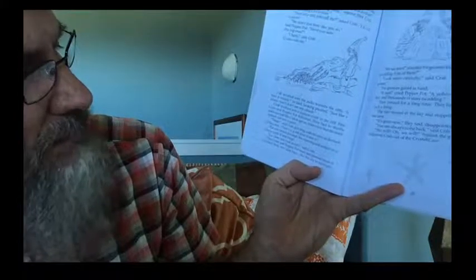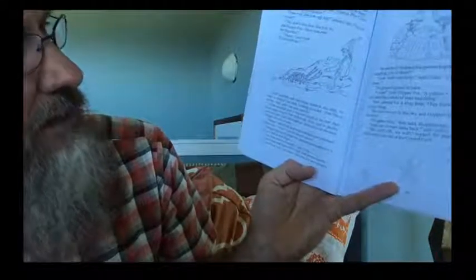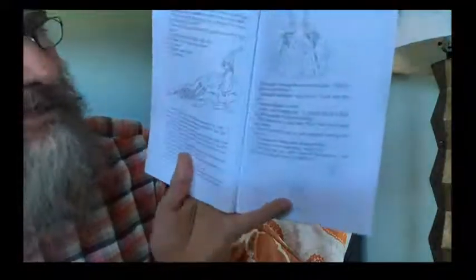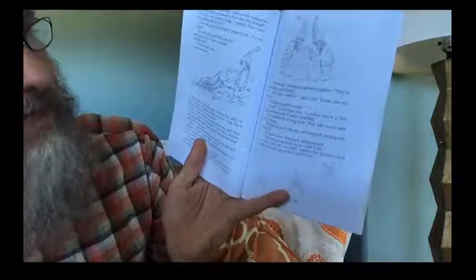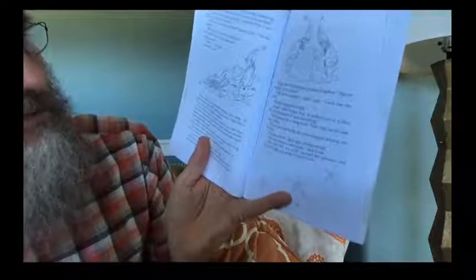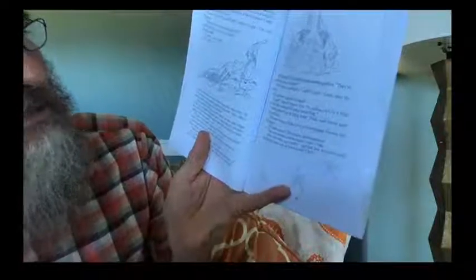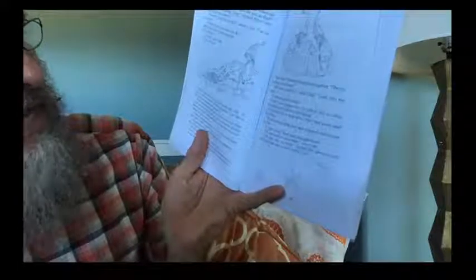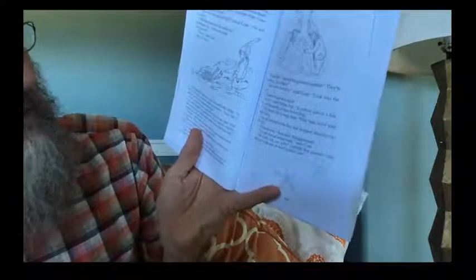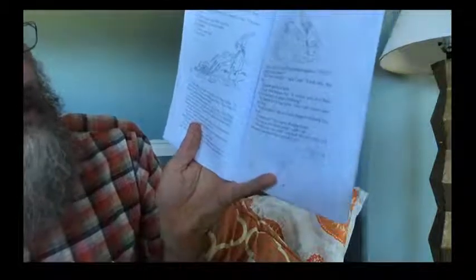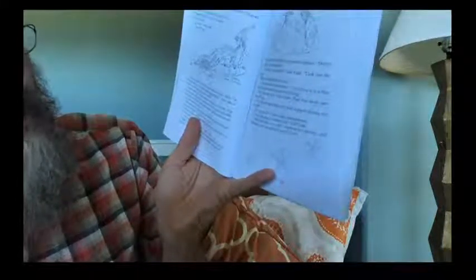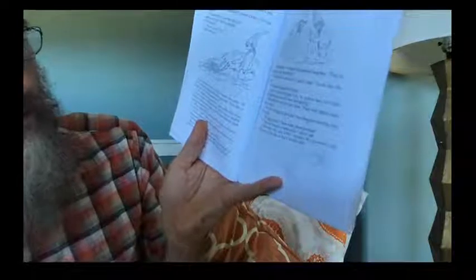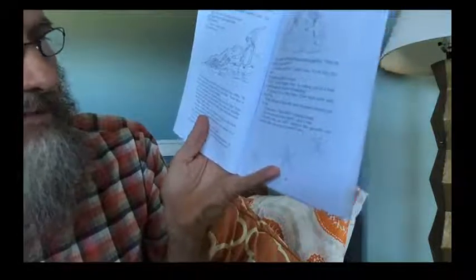Pinecone and Pepperpot went and peered inside. It was dark blue, very dark blue, like the sky at midnight. We see stars, shouted the gnomes together. They're twinkling, lots of them. Look more carefully, said Crab. Look into the center. The gnomes gazed in hard. A sun, cried Pepperpot. A yellow sun in a blue sky and thousands of stars twinkling. They peered for a long time. They had never seen such a thing. The sun moved in the sky and stopped shining into the cave. It's gone now, they said, disappointed. You can always come back, said Crab. We will. Oh, we will, replied the gnomes and followed Crab out of the crystal cave.